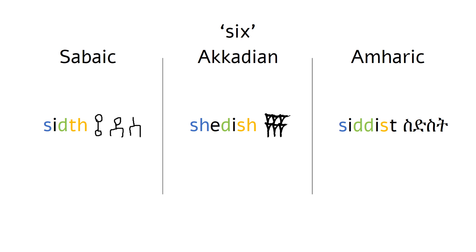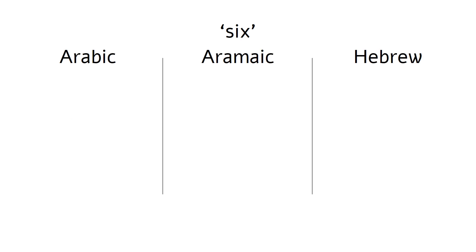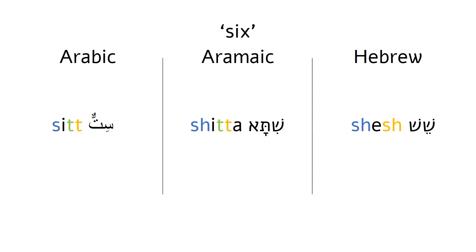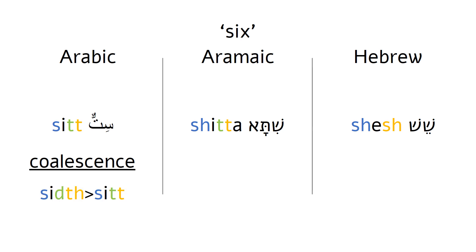Amharic would be a great example for this, and so would the dead languages Akkadian and Sebaic. I didn't find any normal fonts for Sebaic, so I actually had to draw it myself. These languages had some pretty similar consonant shifts to the ones we saw before, but I'm not going to talk about them now. This actually means that the Arabic form comes from a historical consonant cluster. This doubling also happens in Hebrew, but only in the conjugation and is simplified at the end of the word. This is a phonological process called coalescence.